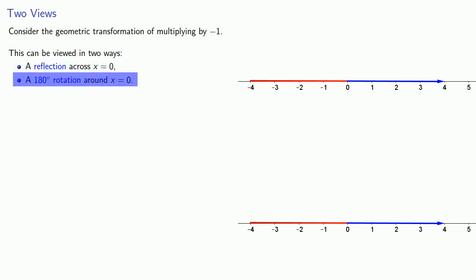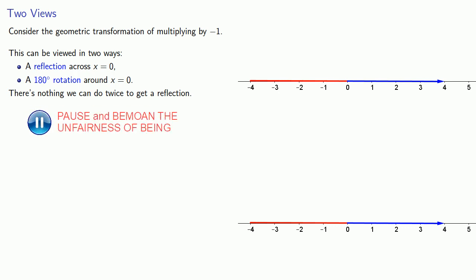We have this algebraic task multiplying by negative 1, and we can view this in two different ways geometrically, either as a reflection or a rotation. But here's the important thing: we can't break a reflection down into pieces. There is nothing we can do twice to get a reflection. On the other hand, we can break the rotation down into smaller pieces.